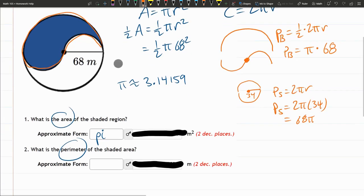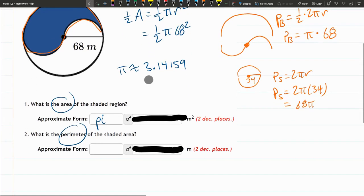Coincidentally, these are both 68 pi right here. We do need to add these two numbers together. So we have 68 pi plus 68 pi, which is 136 pi.